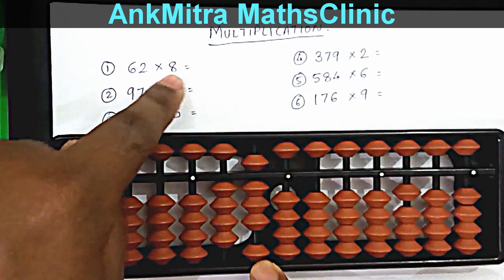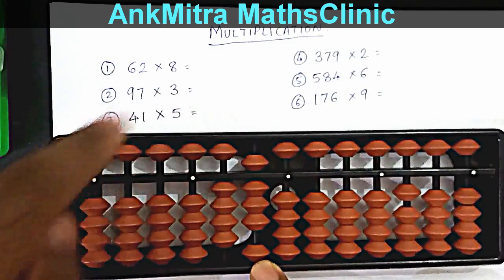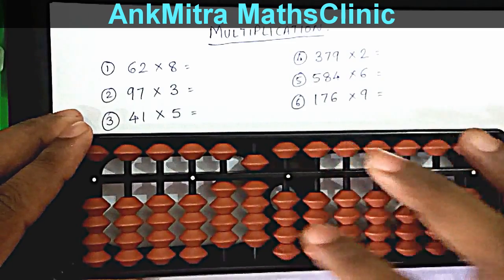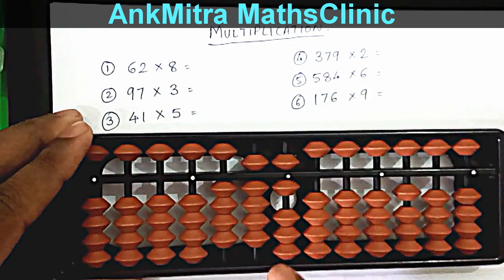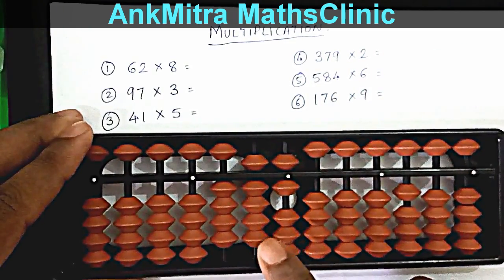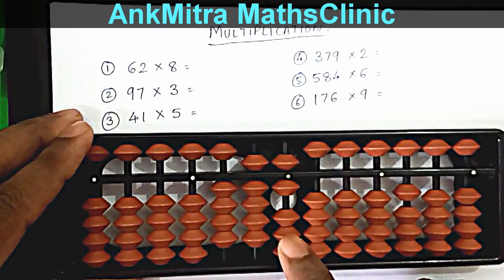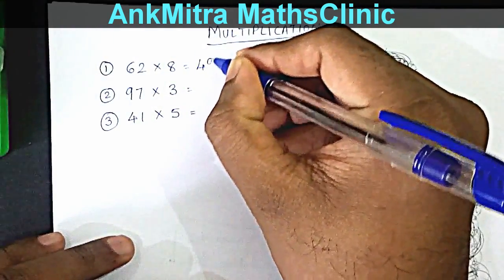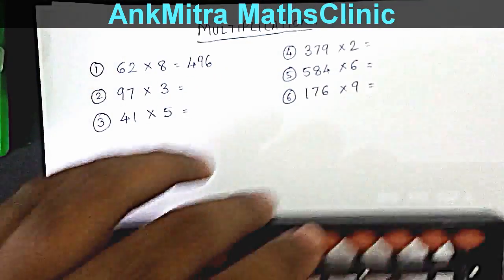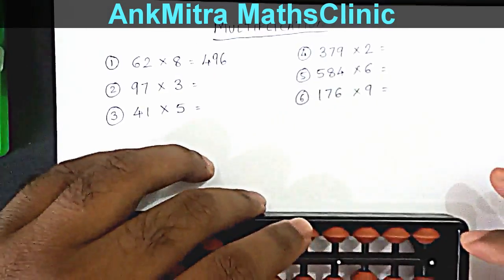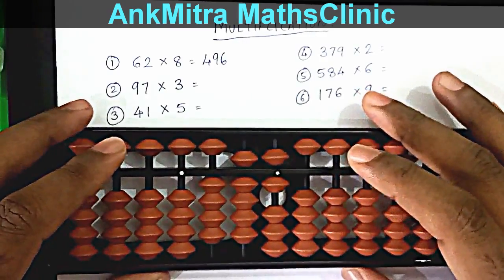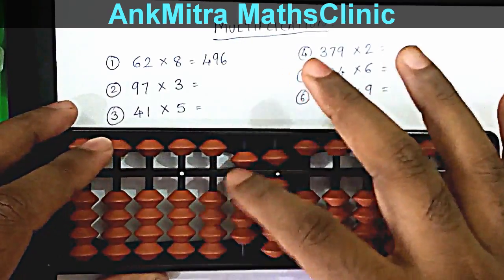Then shift one place to the right and take the units digit 2 multiplied by 8. 2 times 8 is 16, so 16 will be added from the tens place rod — 1 on the tens place and 6 on the units place. The answer for 62 multiplied by 8 is 496.